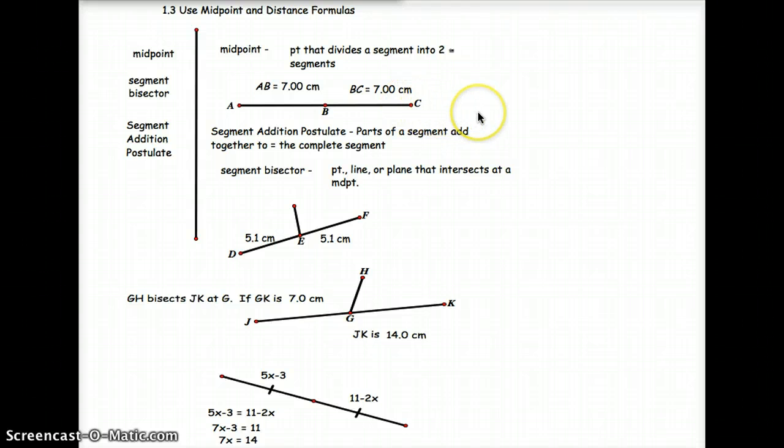And then segment bisector, that's a point or a line or a plane, any of those three things, that intersects at a midpoint.